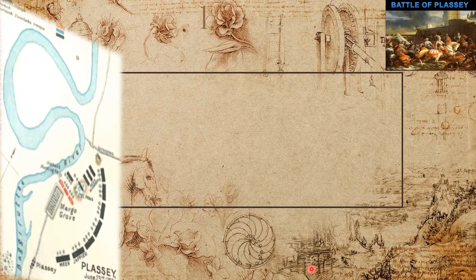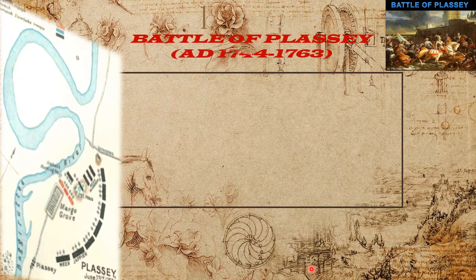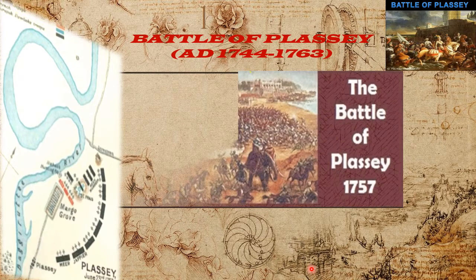Mughal Emperor Farrukhsiyar issued a firman granting the English East India Company the right to carry on duty-free trade in Bengal. This angered the Nawab of Bengal, Siraj ud-Daula. Siraj ordered the British to pay taxes to him like all other Indian merchants, but the British refused to do so.